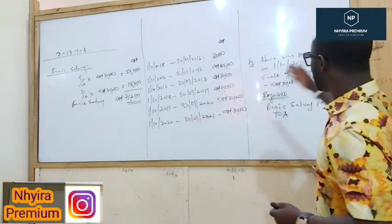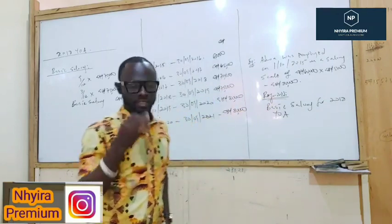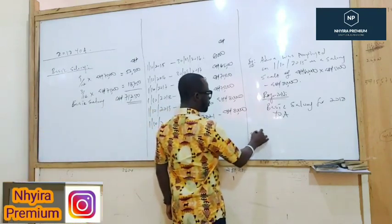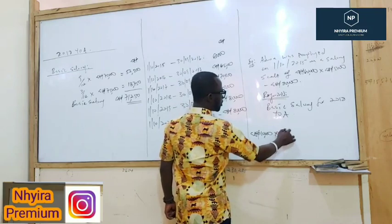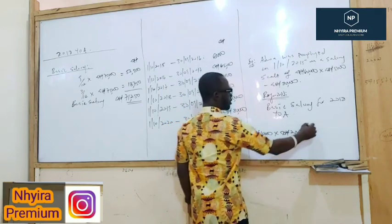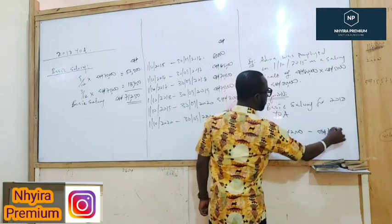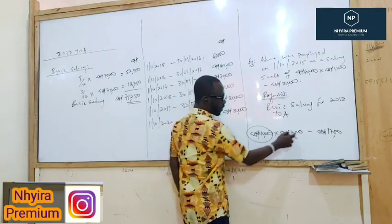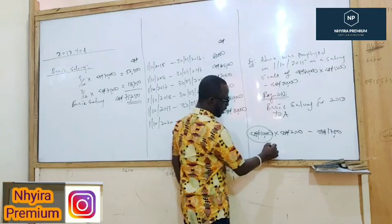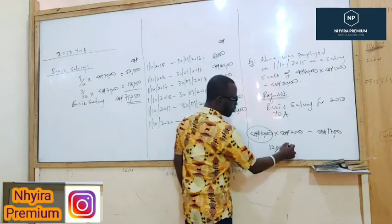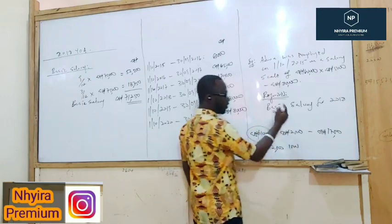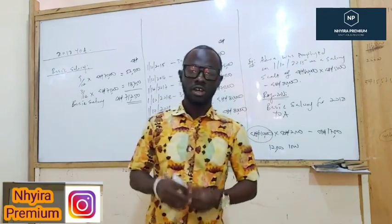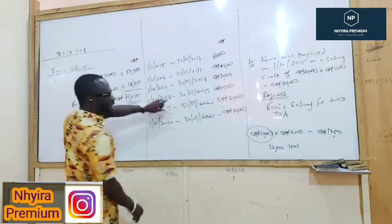For example, if a salary scale were given as 10,000 × 2,500 – 17,500, it means in the first year the person receives 10,000; in the second year, 12,500; in the third year, 15,000; in the fourth year, 17,500. After that, the person will be receiving 17,500 throughout. That is how we determine the salary applicable under a salary scale.